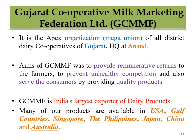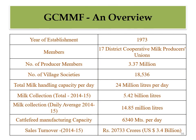GCMMF is India's largest exporter of dairy products. Throughout India different states have their own state-level federations, but in Gujarat, GCMMF is India's largest dairy products exporter. Amul products are available in the USA, Gulf countries, Singapore, Philippines, Japan, China, and Australia. GCMMF was established in 1973 with its headquarters in Anand.